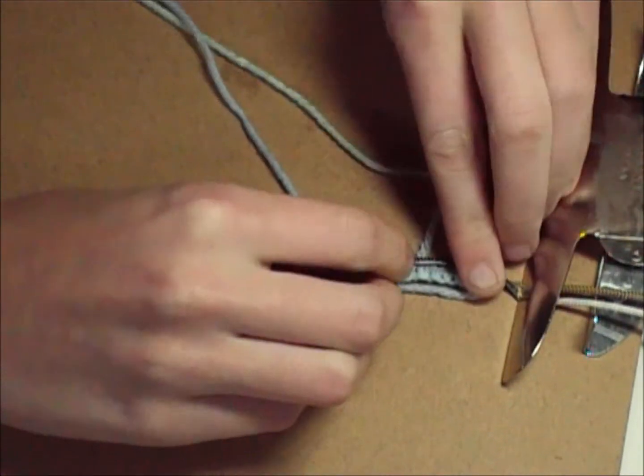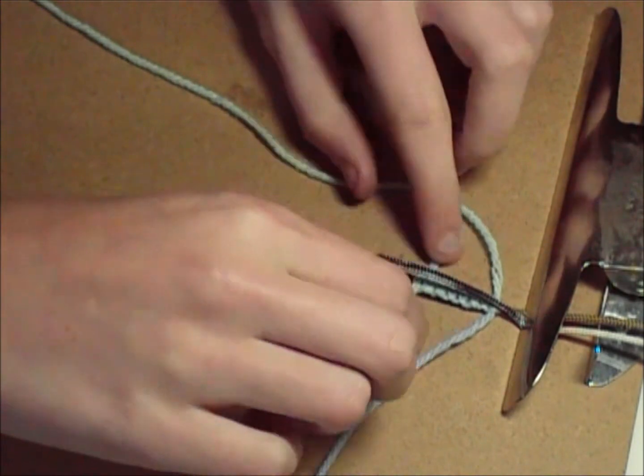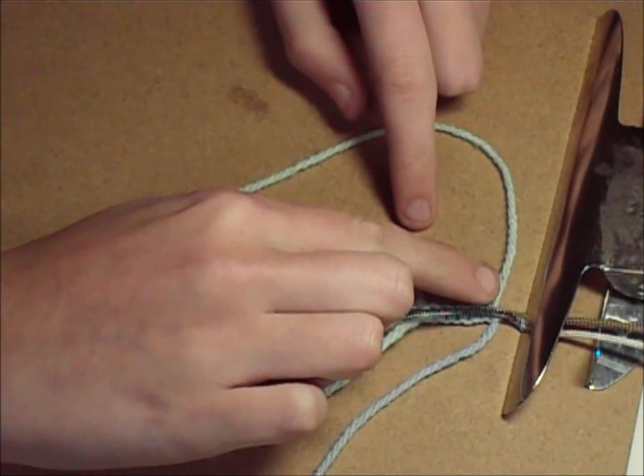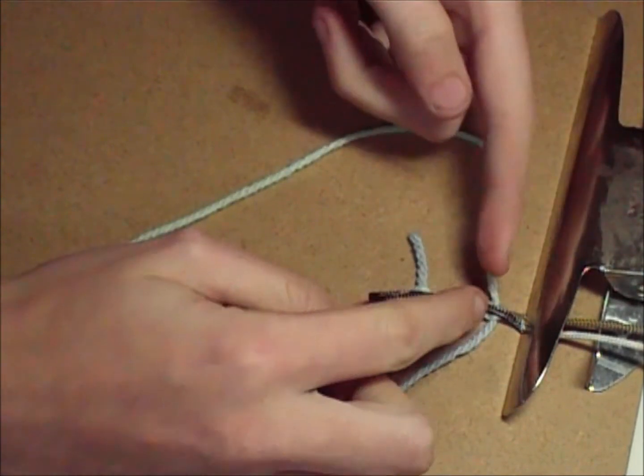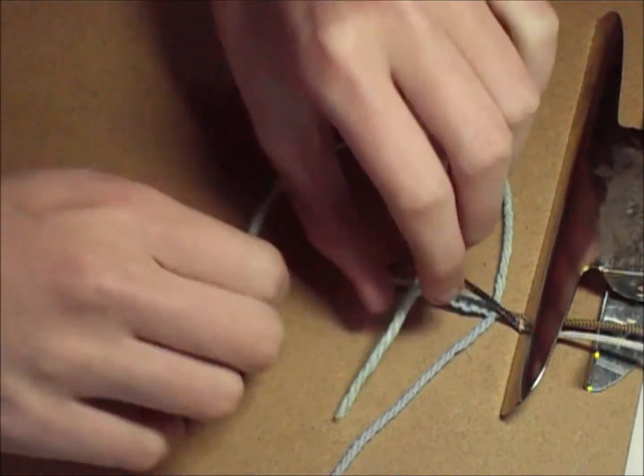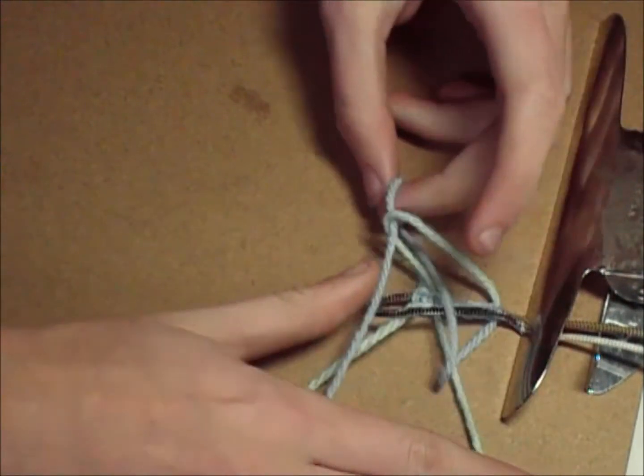Now this is where it gets a little bit tricky. We are going to do the same what we did with this one. Just going back up towards here again. So you go under, over, over, through.